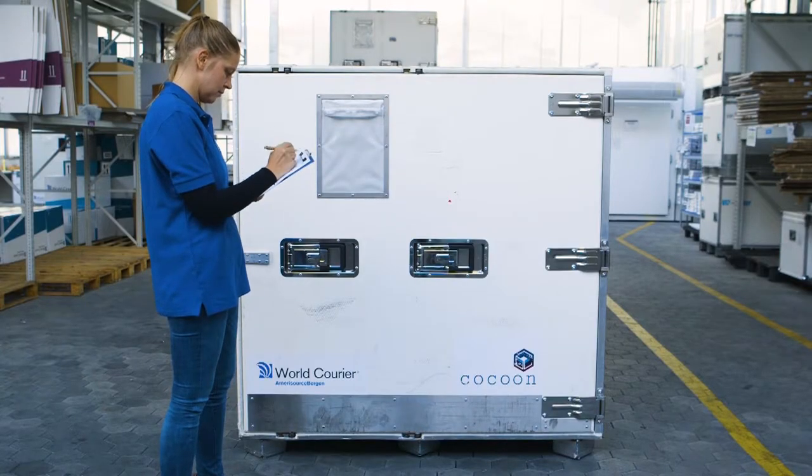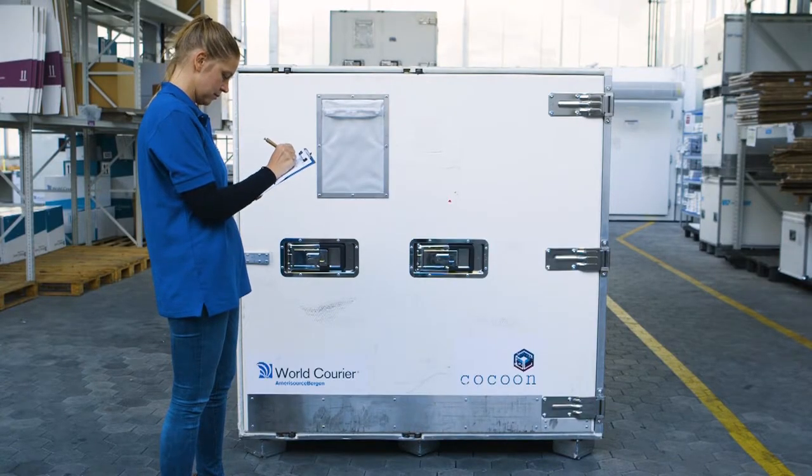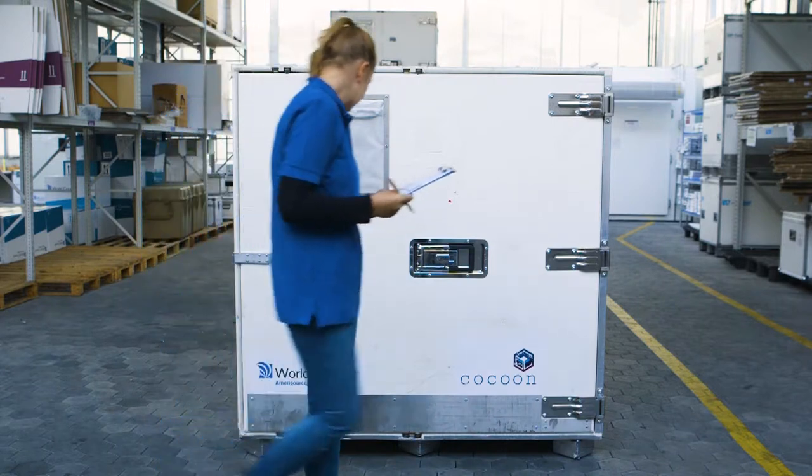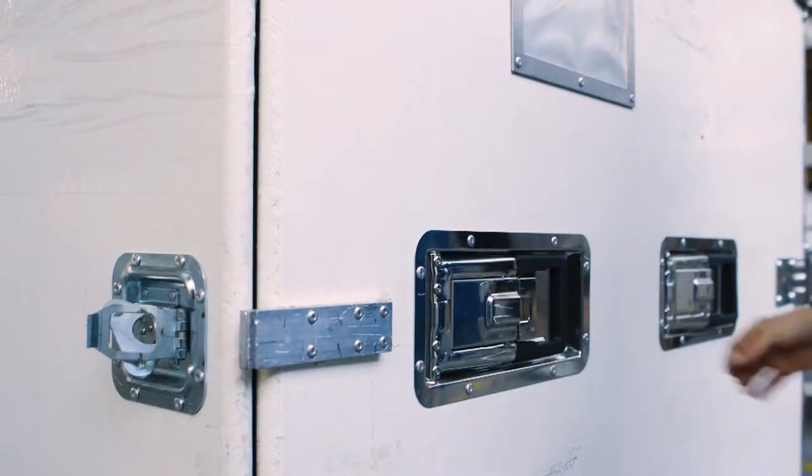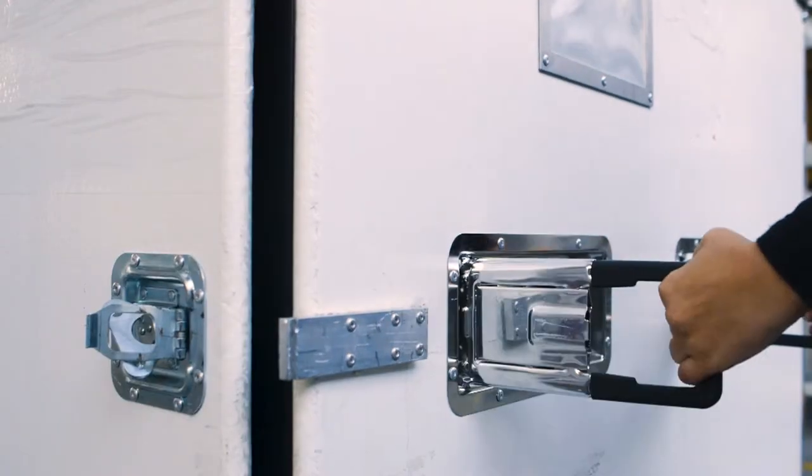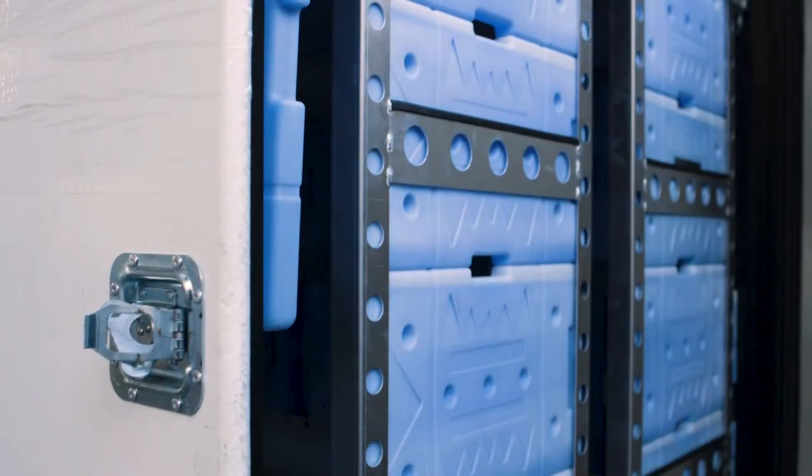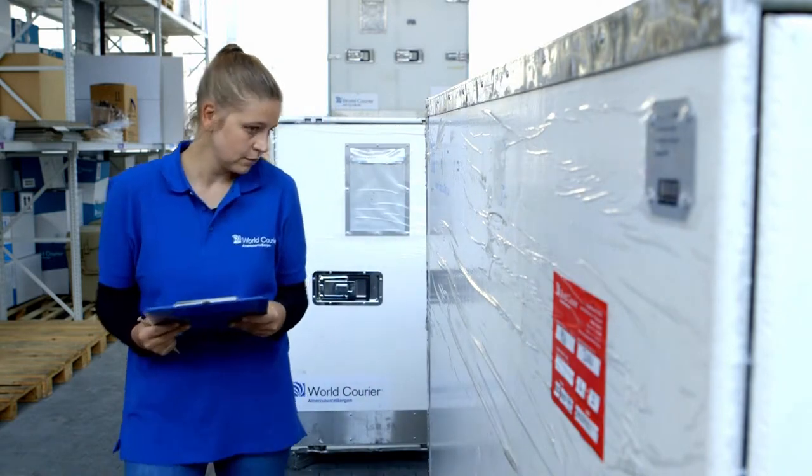After the delivery of any shipment the Cocoon unit returns to the World Courier facility. A World Courier associate fully inspects for any damage that might have occurred during transport. Both the interior and exterior of the Cocoon are carefully checked for anything that might compromise the unit.